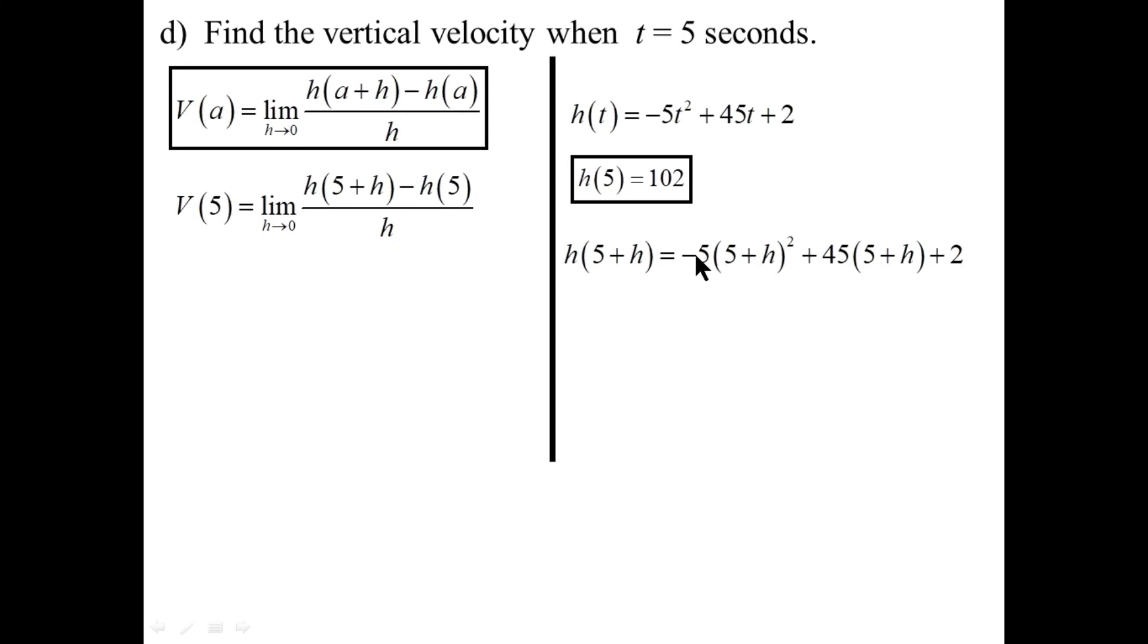Doing so, it looks like this. And now, we have to square a binomial times negative 5 all in one go. It will be 25 times minus 5. Double the product, which is 10h times minus 5. And then, plus h squared times minus 5. So these two are the same. And then, distribute the 45 into the brackets. And don't forget the plus 2 in the end. Collect like terms. And we're ready to plug into our formula now.